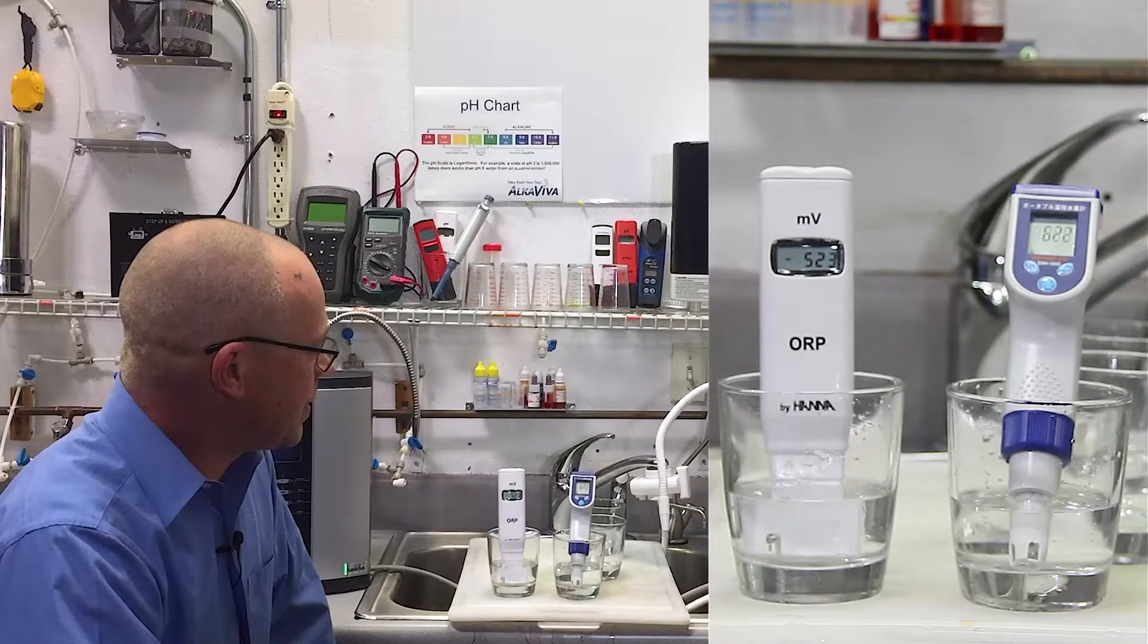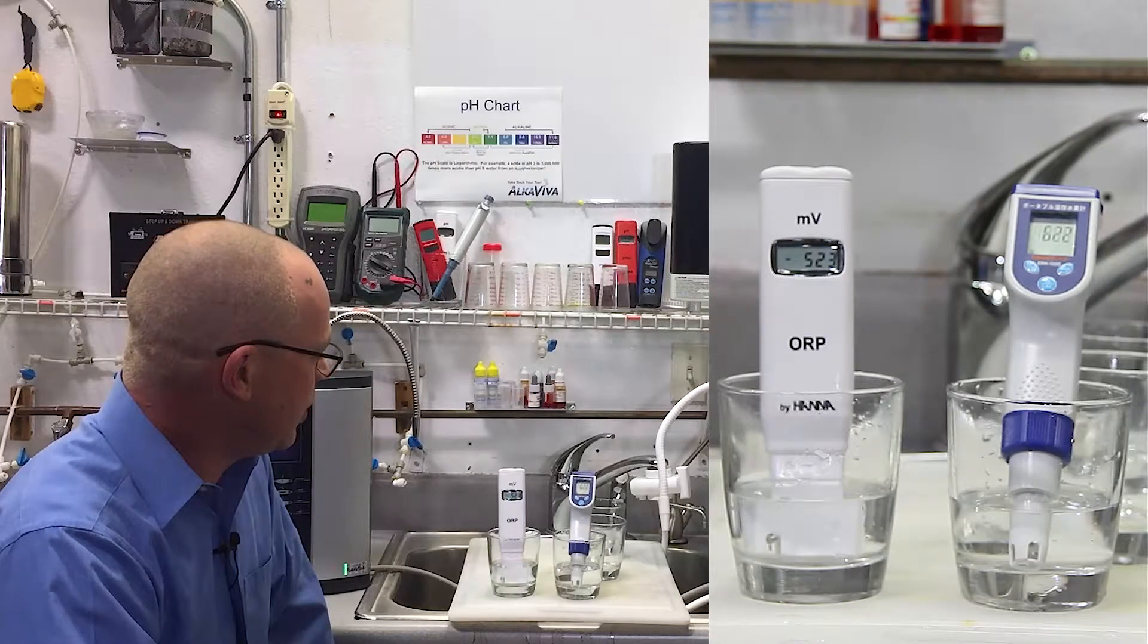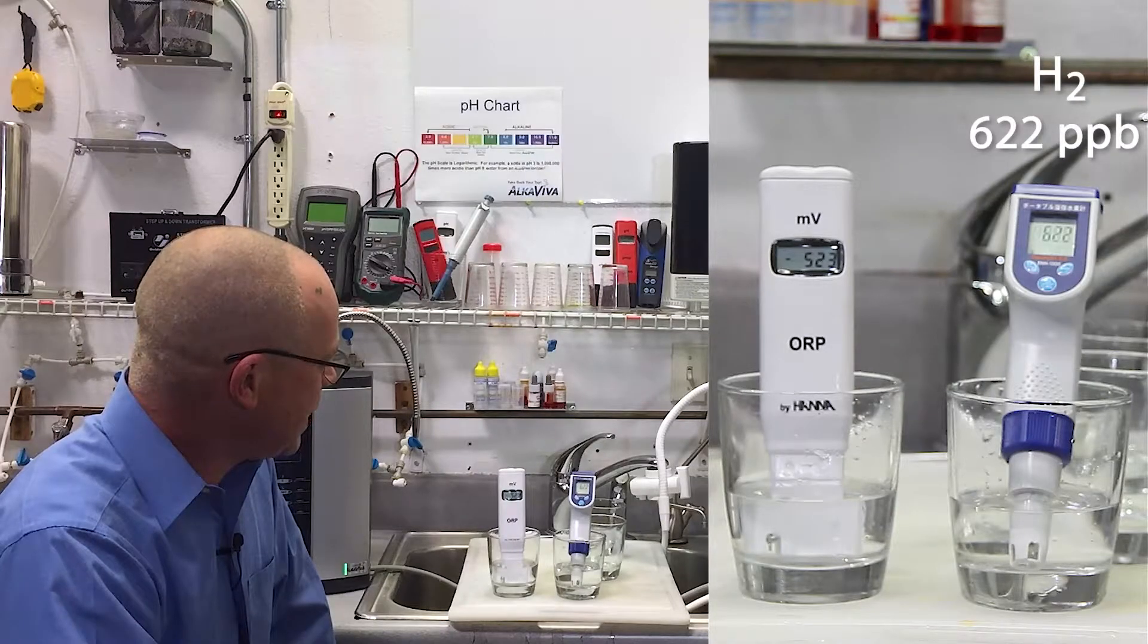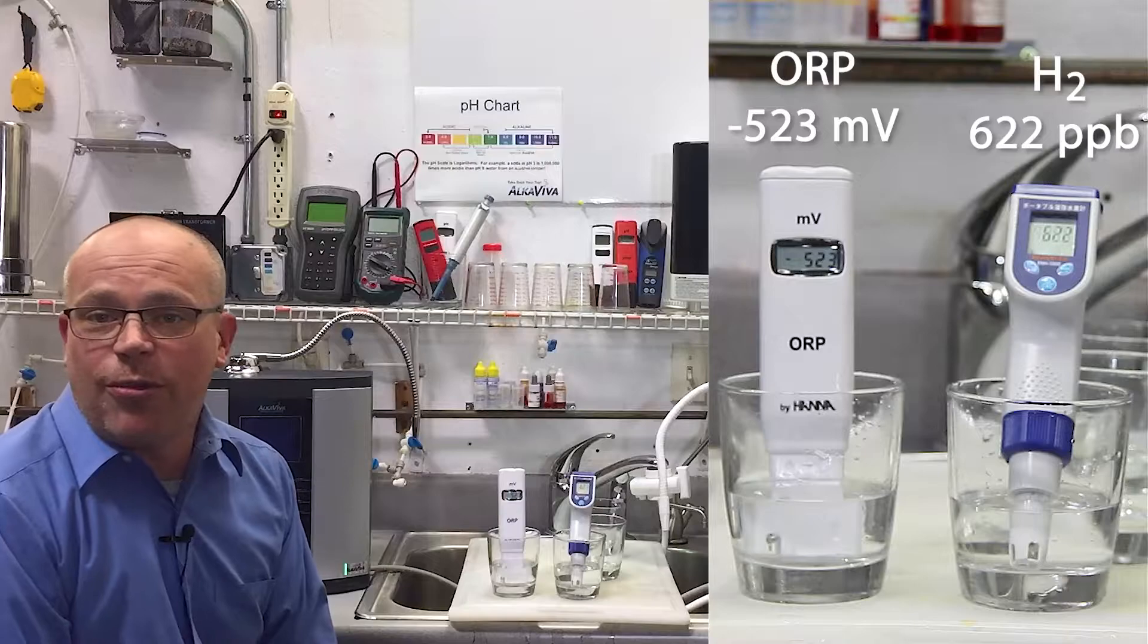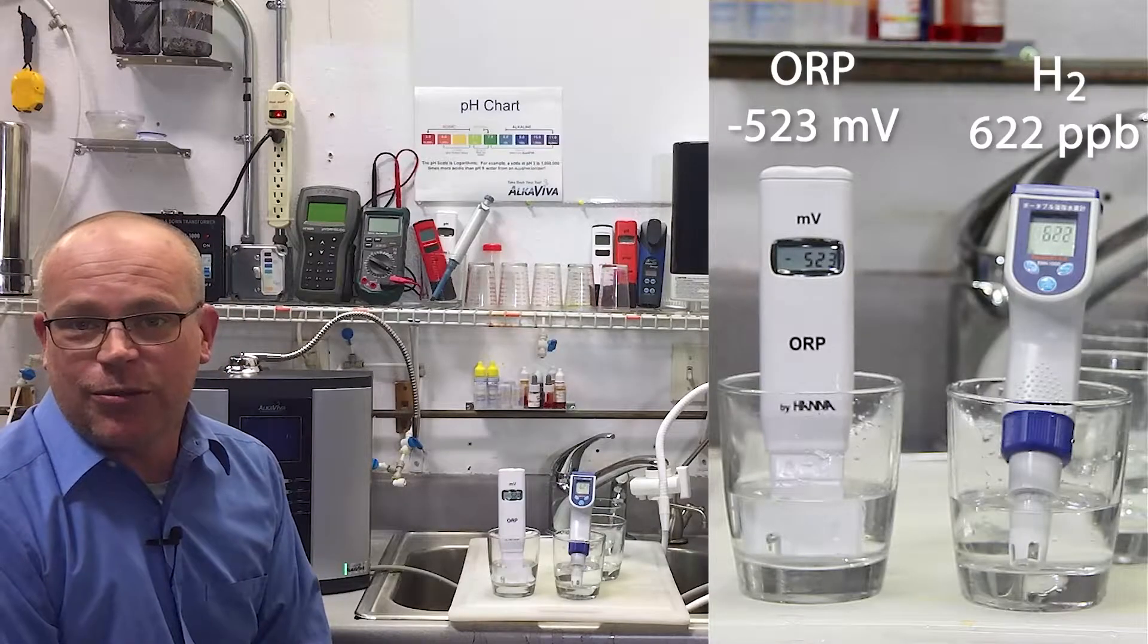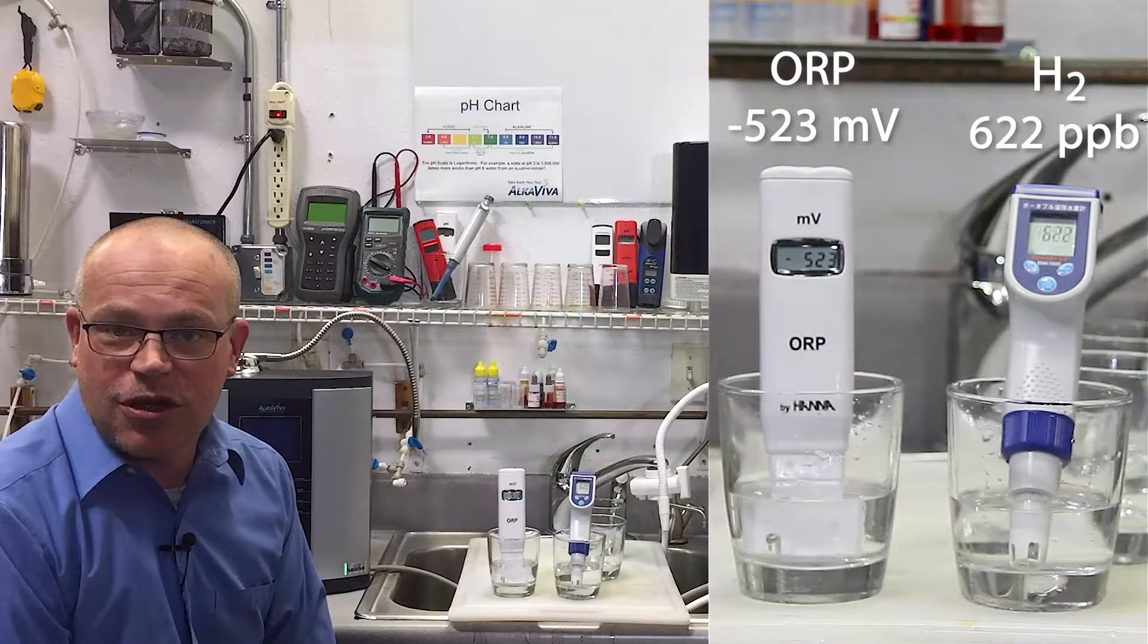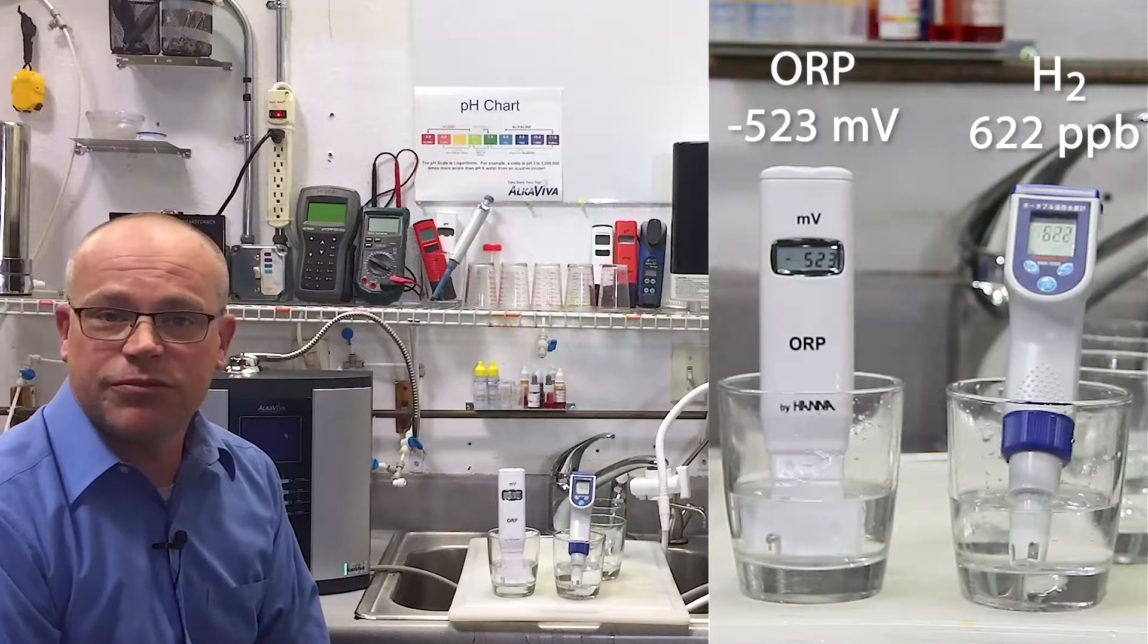H2 is at 622 parts per billion. ORP is at negative 523. So almost double the negative ORP and almost double the molecular hydrogen content on a similar setting.